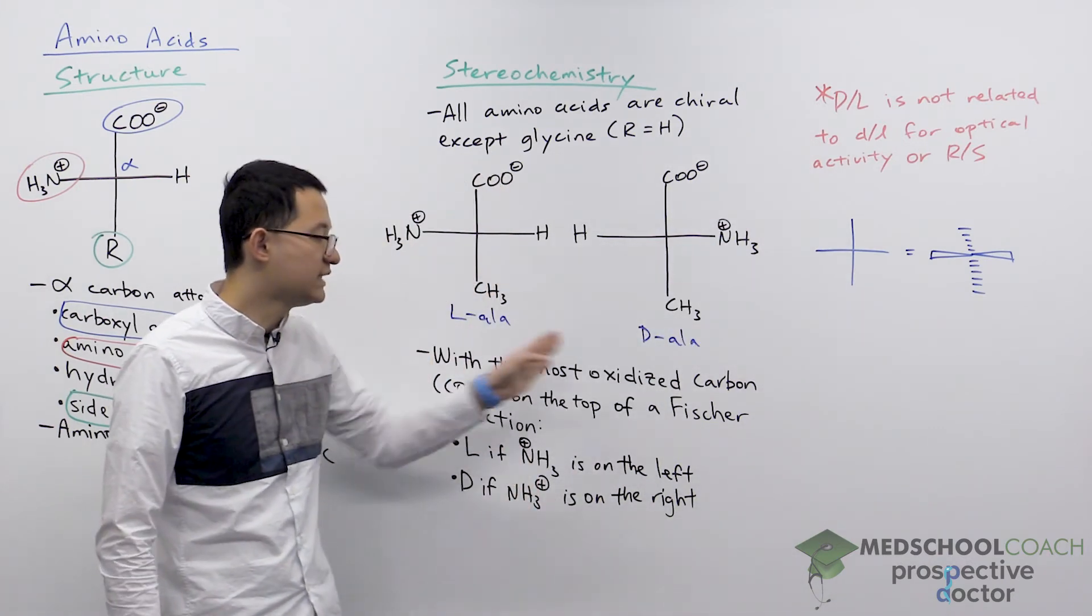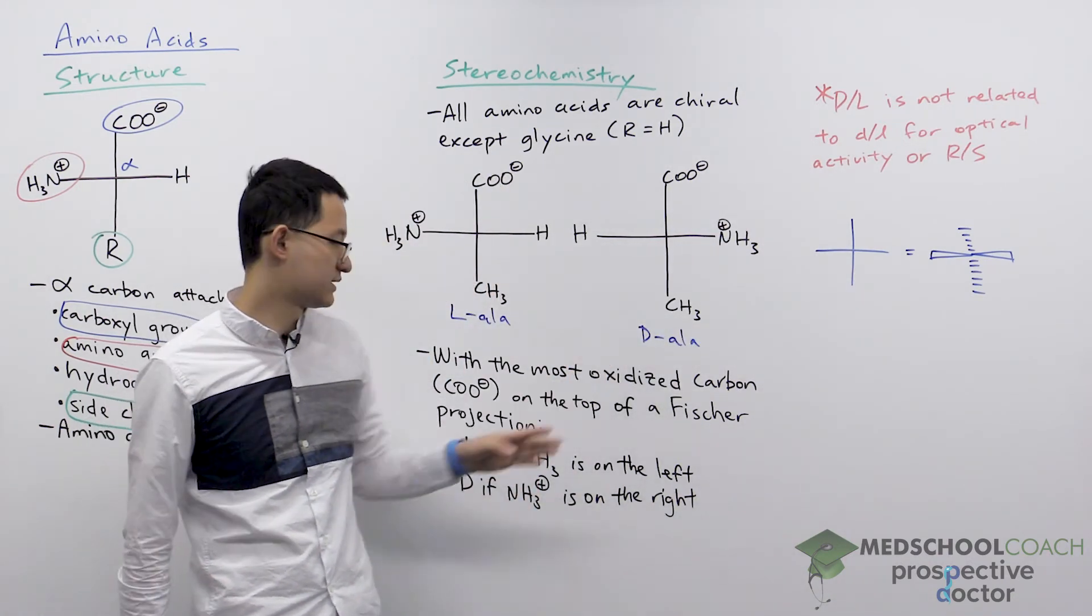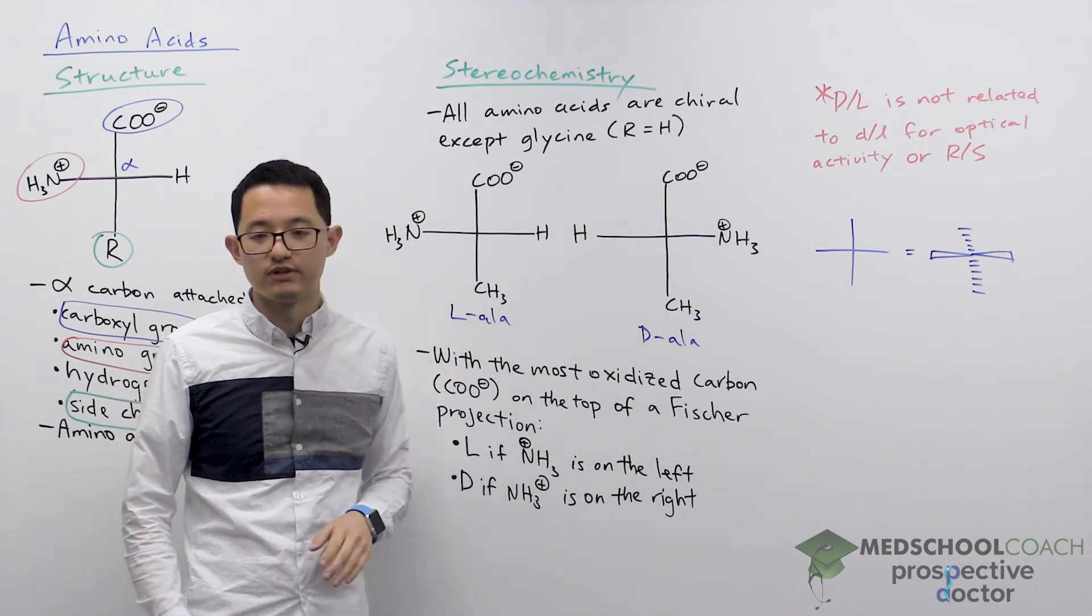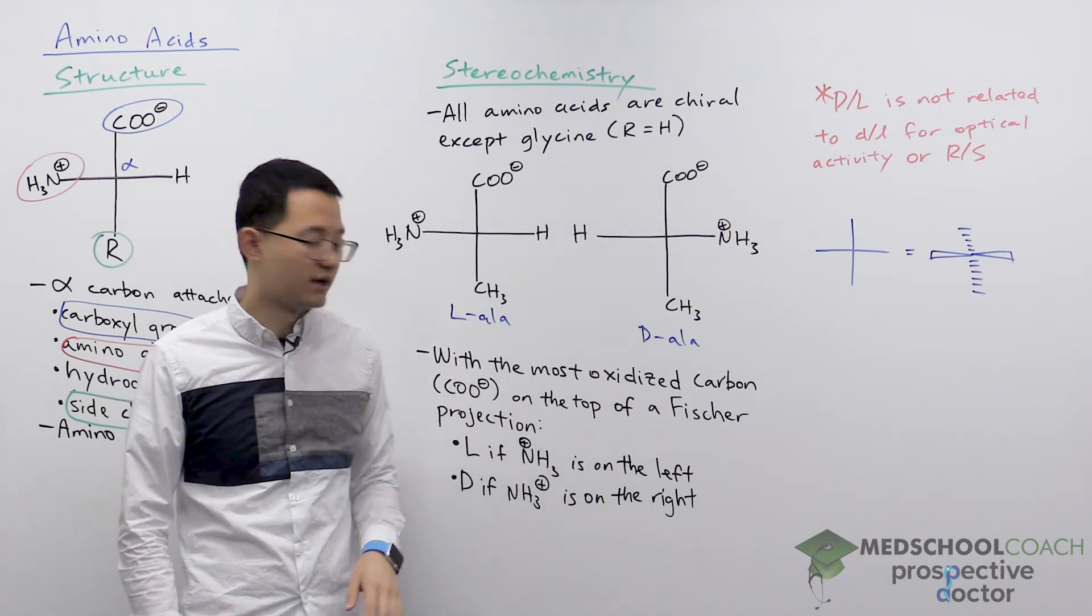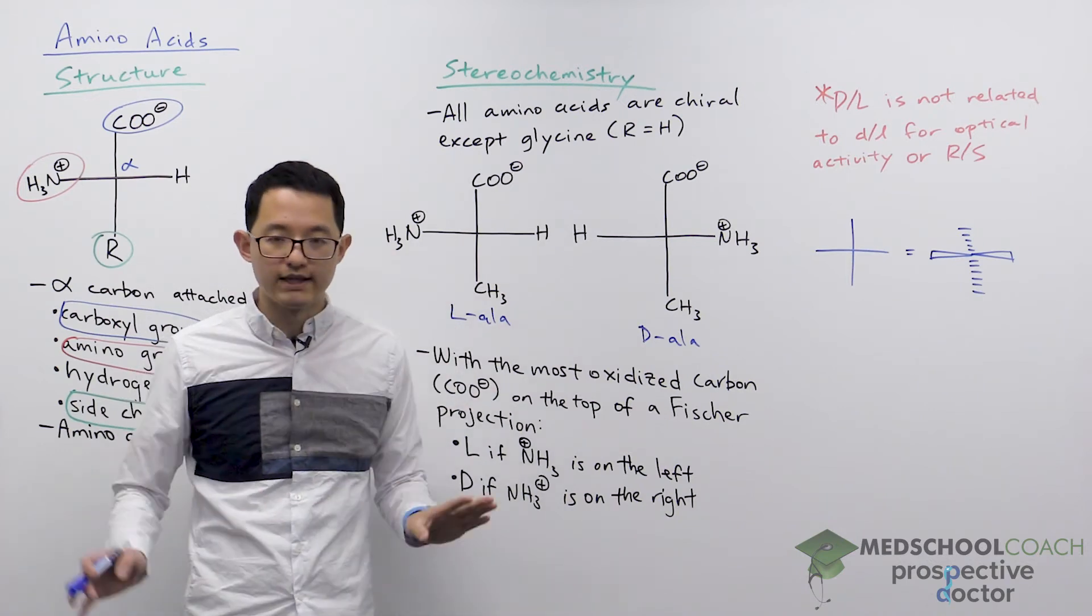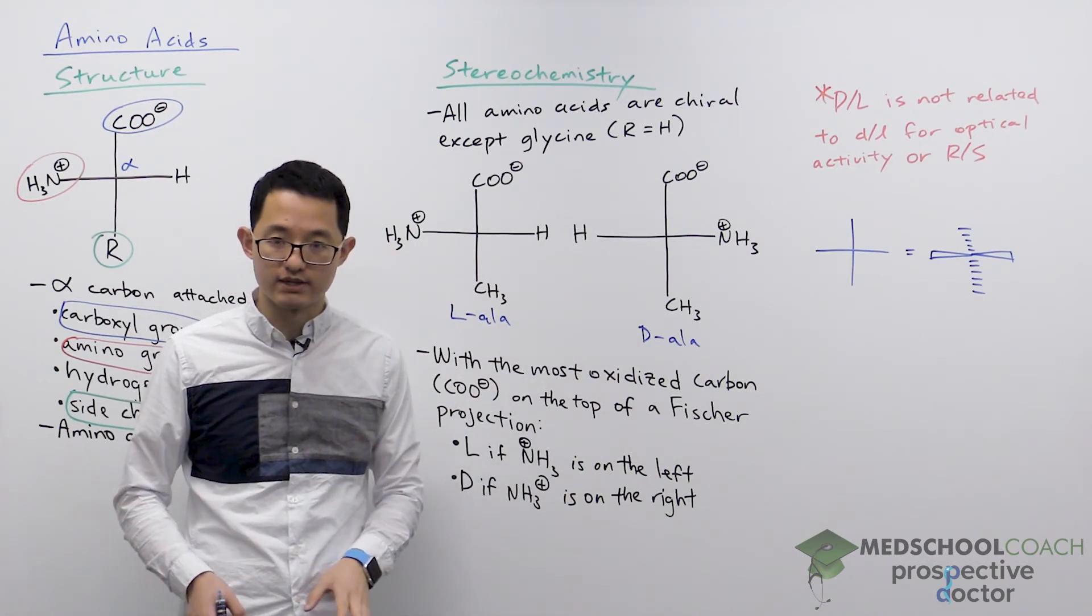It's important to note that these are not related with each other. Capital D does not mean it's going to rotate light clockwise and L does not mean it's going to rotate light counterclockwise. Capital D, capital L are unrelated to lowercase d and lowercase l.